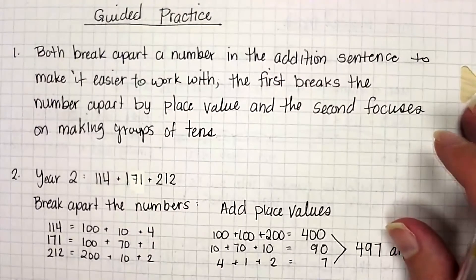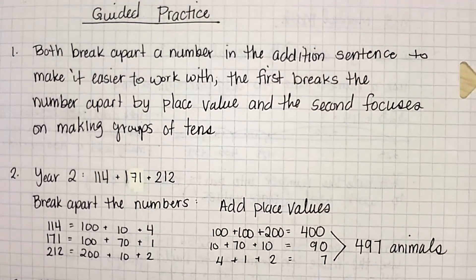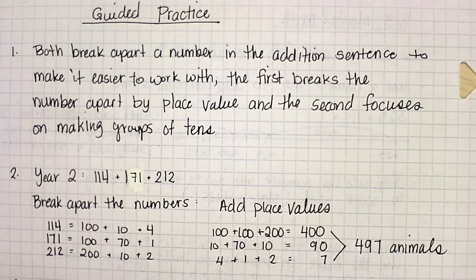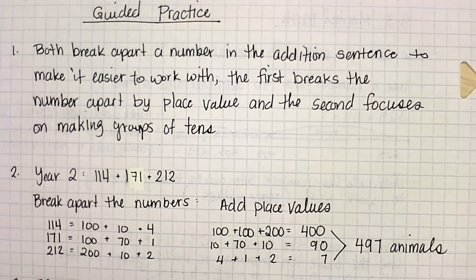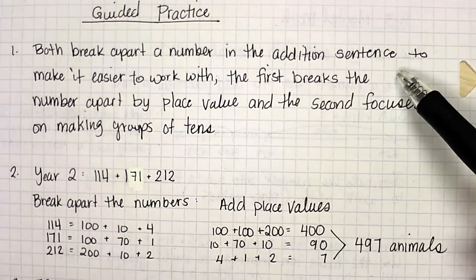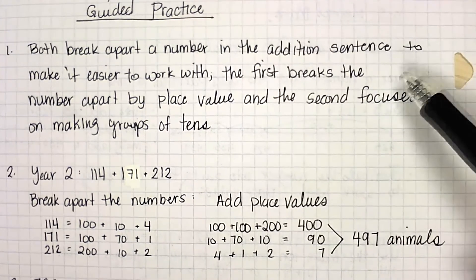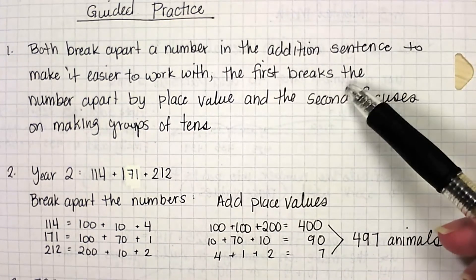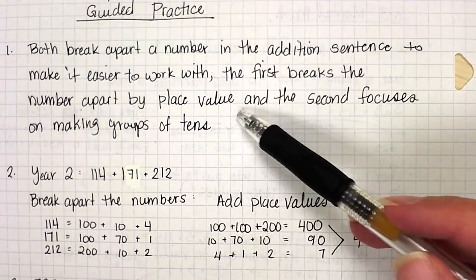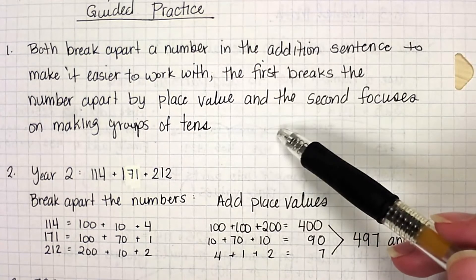Let's take a look at your guided practice. So for your guided practice for number one, it was asking what is the difference between the strategies? Now, both will break the numbers apart into addition sentences to make it easier to work with. The first one with the number line breaks it apart by place value. And the second one focuses on making groups of 10.